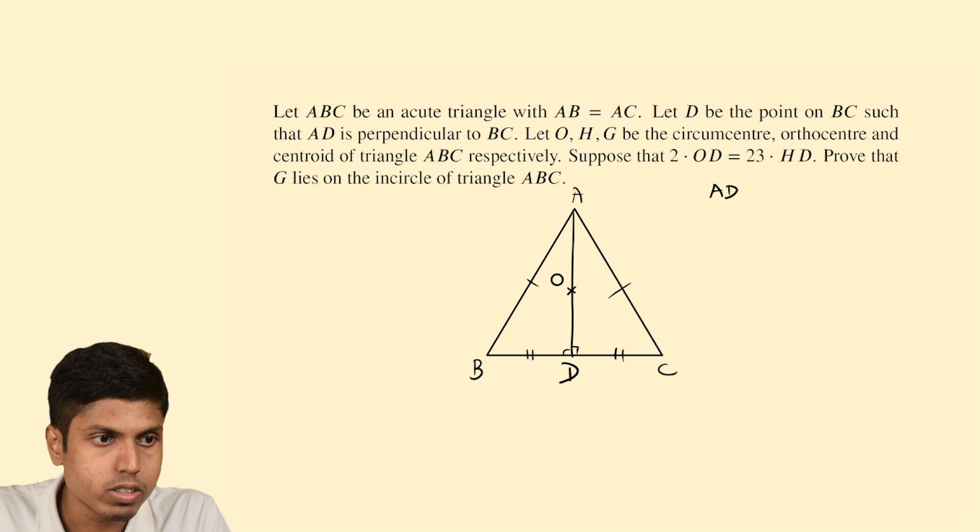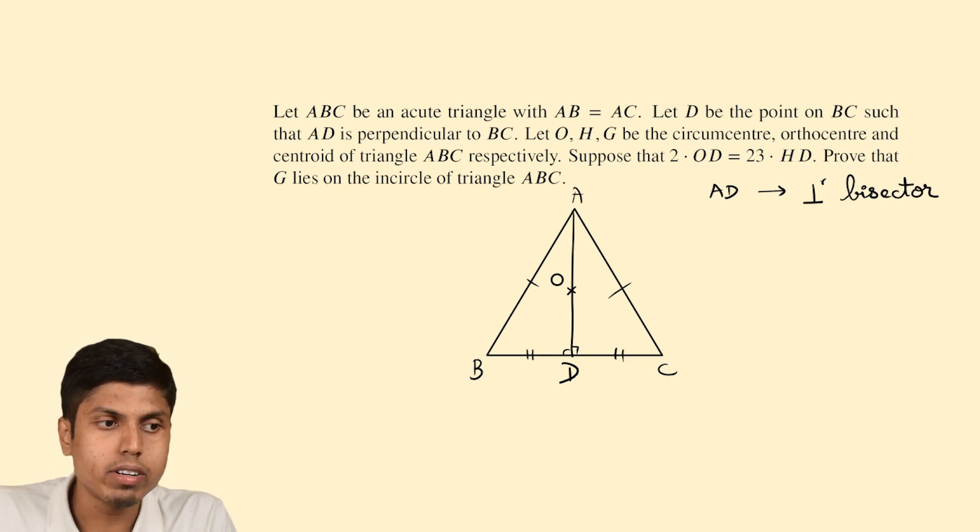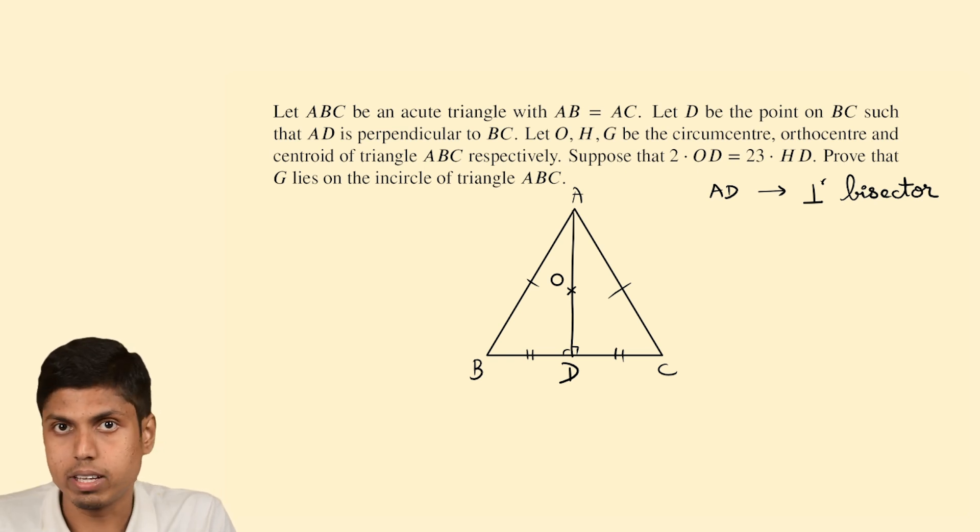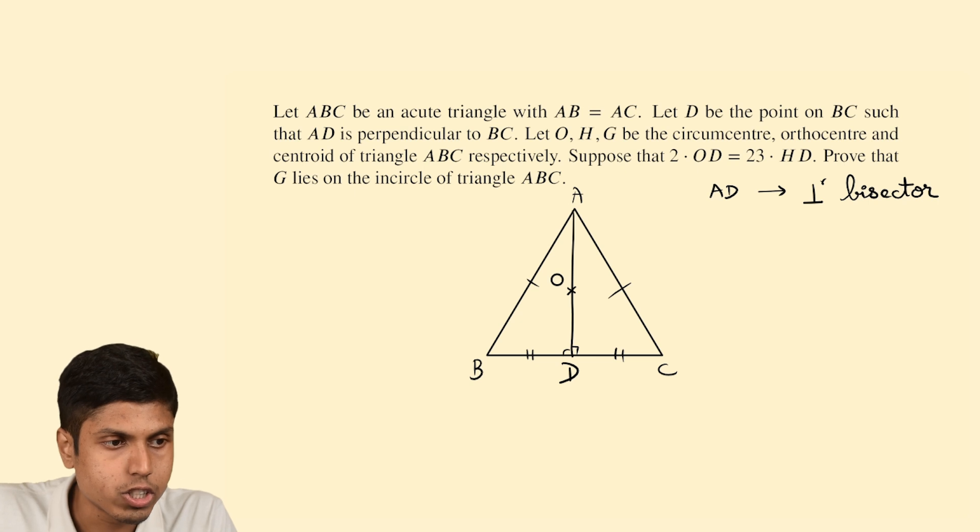So first you have to analyze that AD is the perpendicular bisector. So after deducing this you then have to think about the orthocenter. Clearly AD is the altitude from A. So orthocenter shall also lie on the altitude.